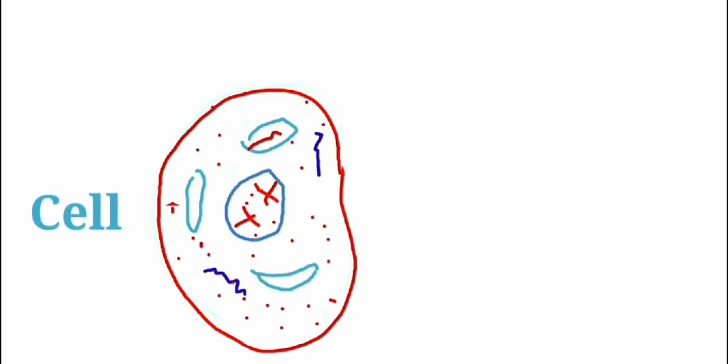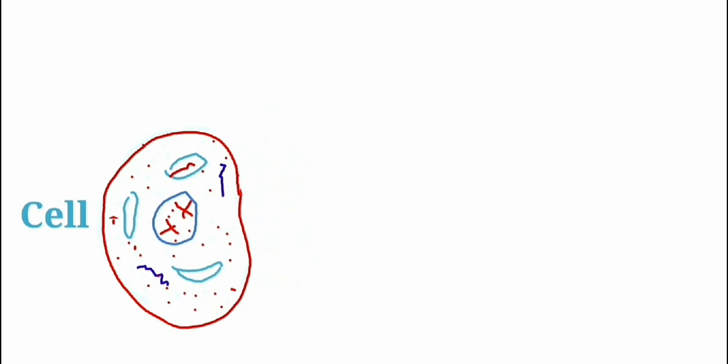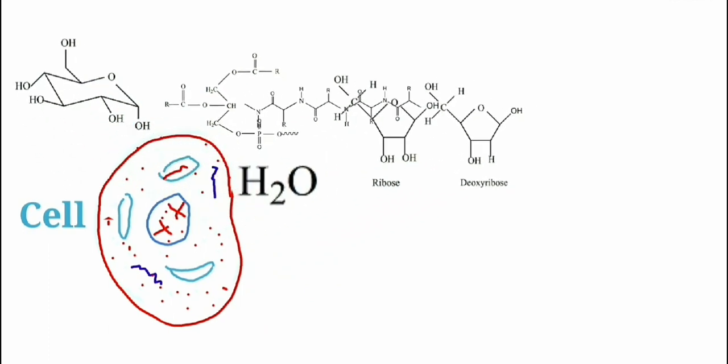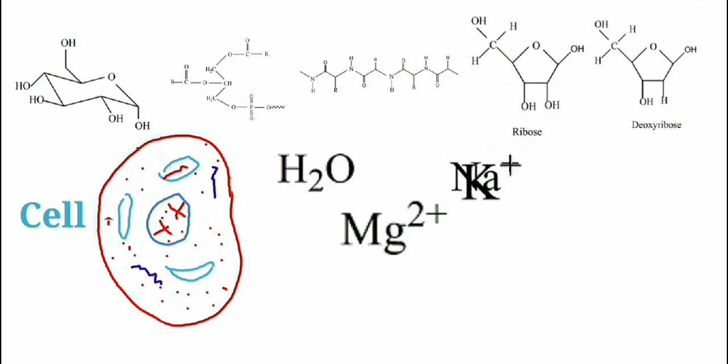The cell, which is the structural and functional unit of all living things, is made of molecules like carbohydrates, lipids, protein, nucleic acid, water and ions like sodium, potassium, magnesium, phosphate, chloride, etc.